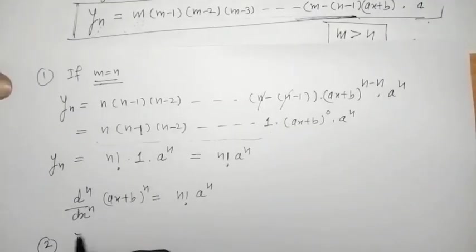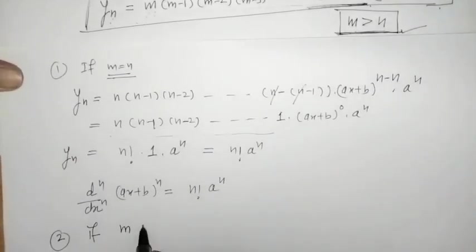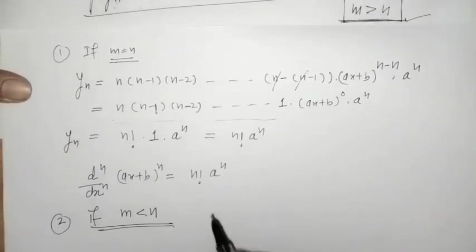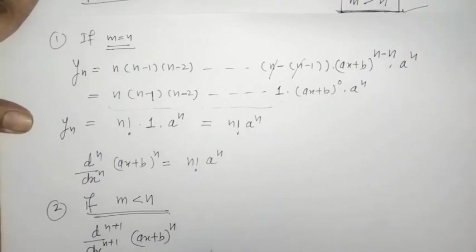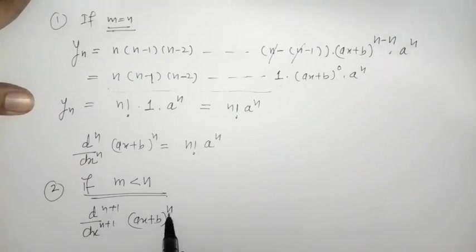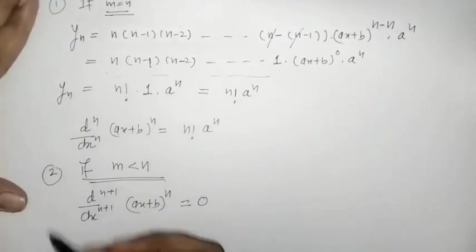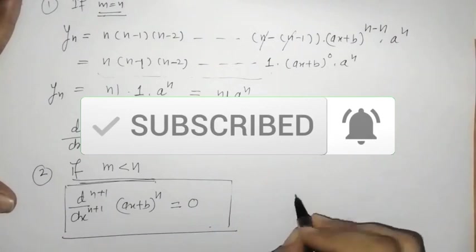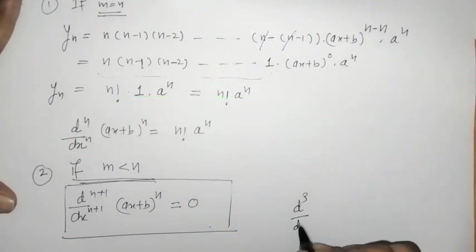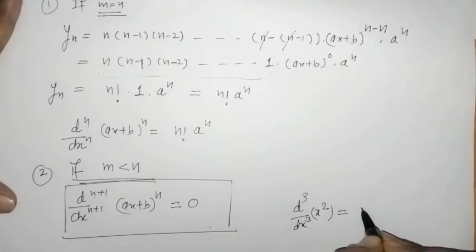Next, consider the case where m is less than n. If we find a higher-order derivative than the power, the result is 0. For example, the third derivative of x² is 0, since the power 2 is less than the order 3.